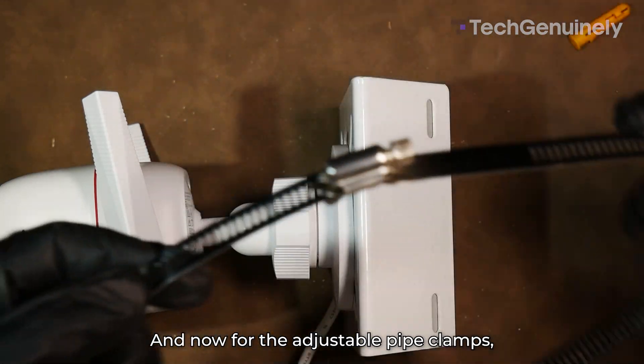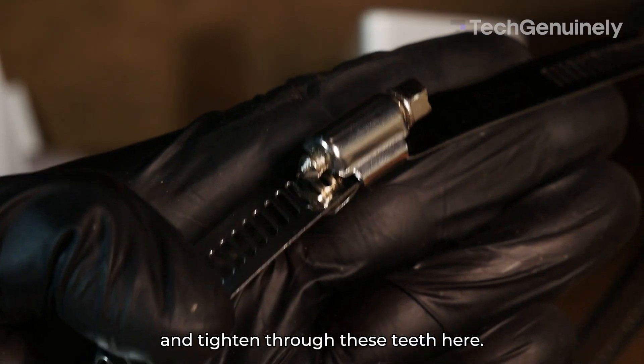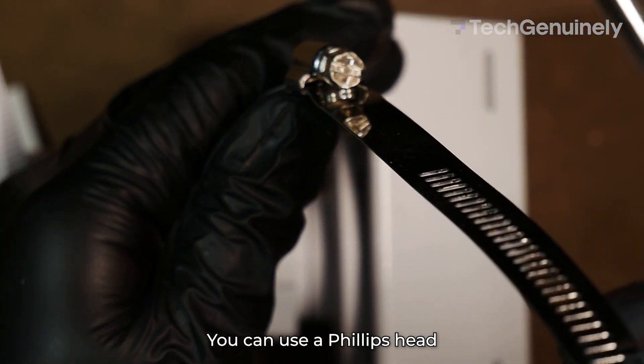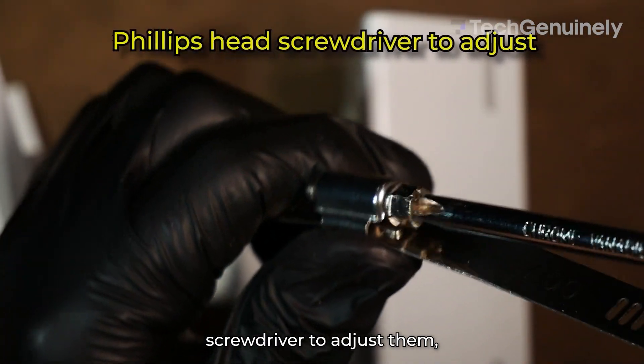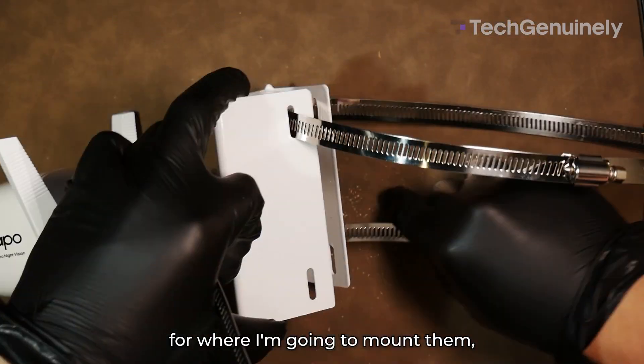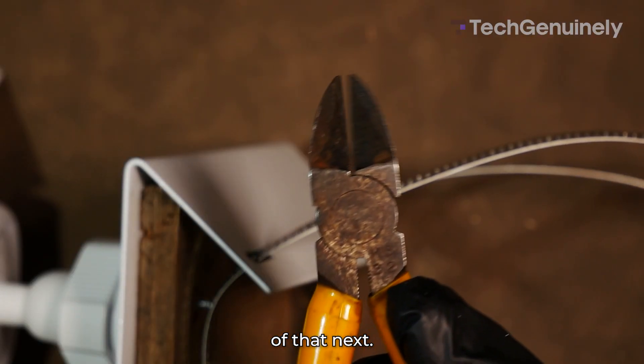And now for the adjustable pipe clamps. They're made of flexible metal and tightened through these teeth here. You can use a Phillips head screwdriver to adjust them. But these are too big for where I'm going to mount them, so you'll see how we take care of that next.